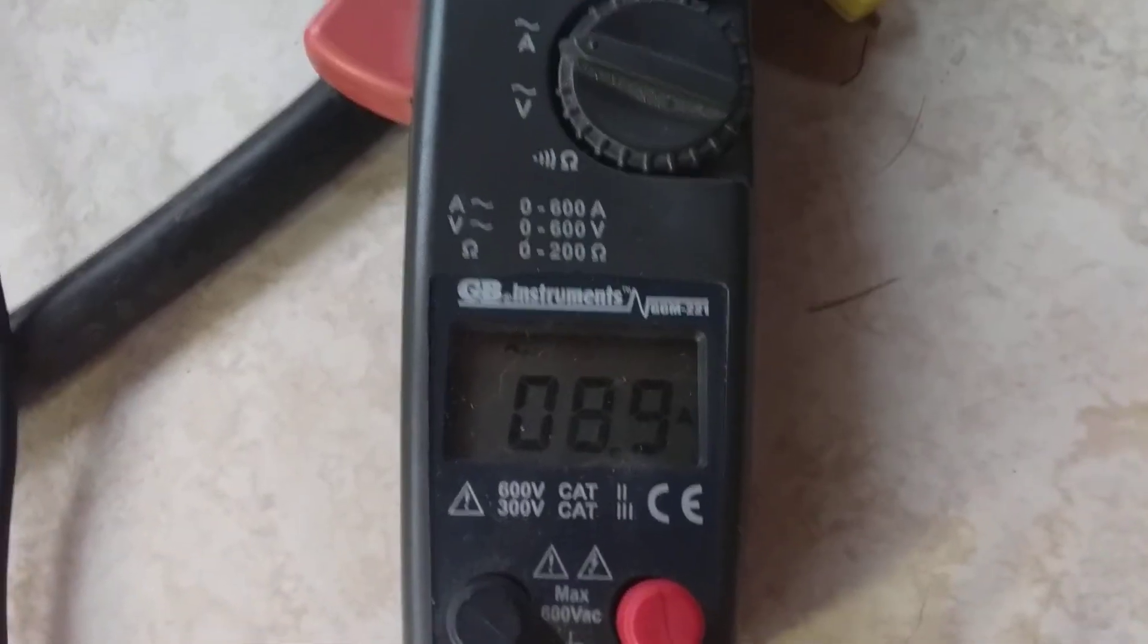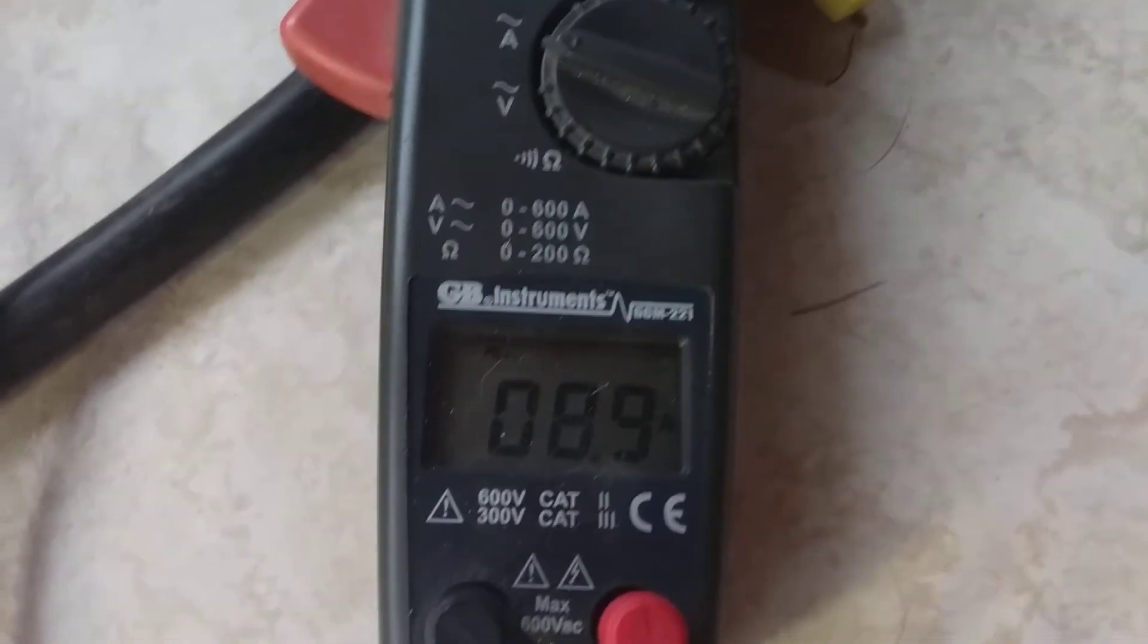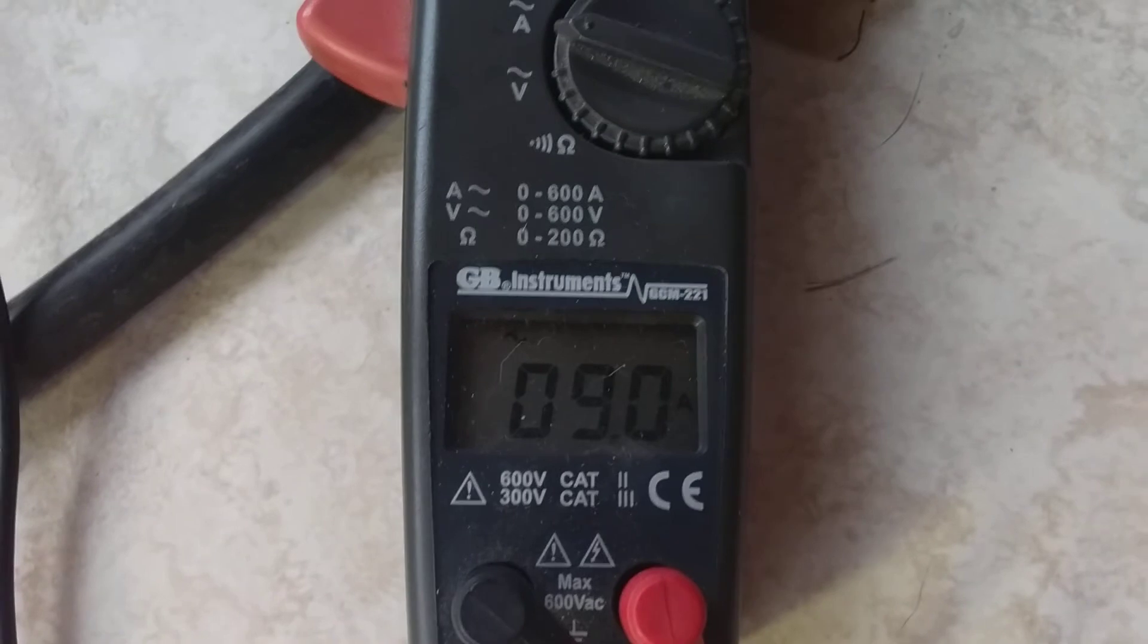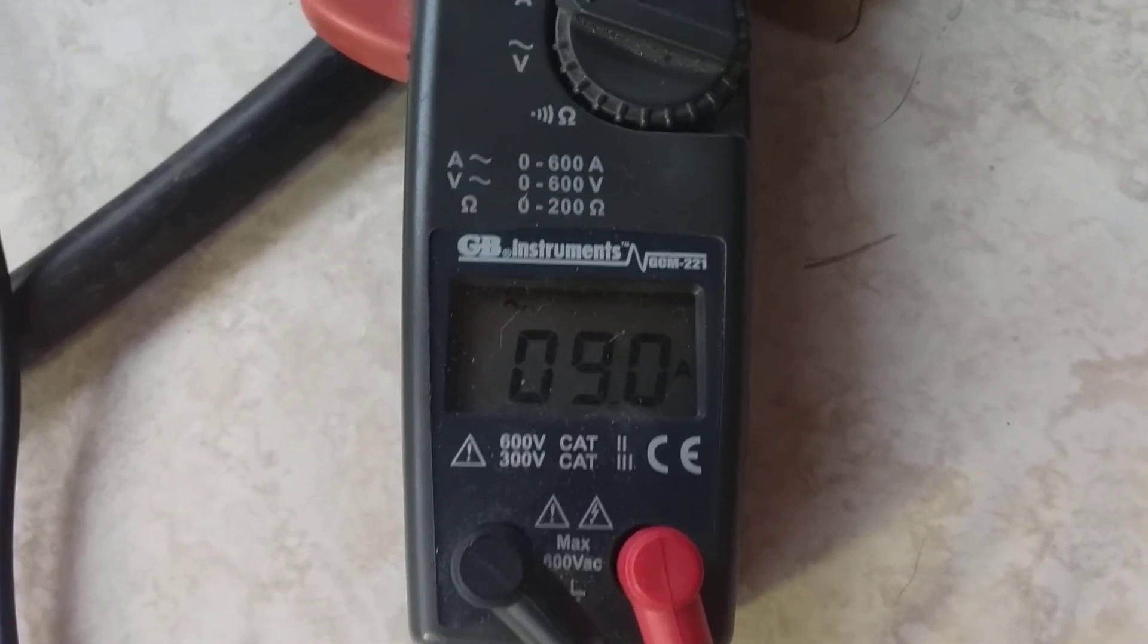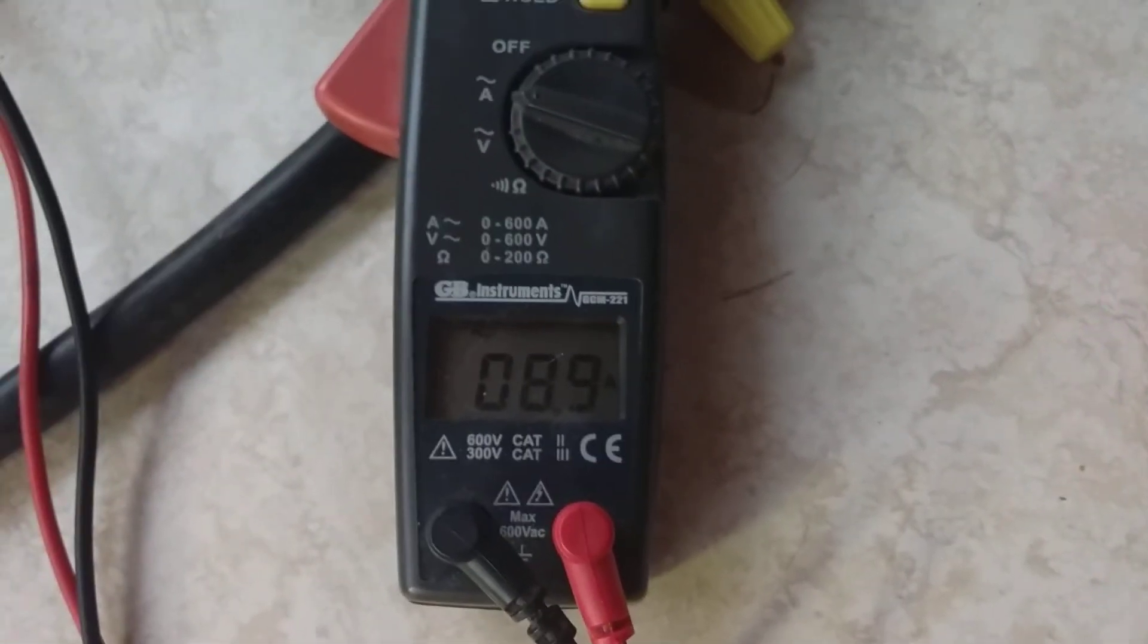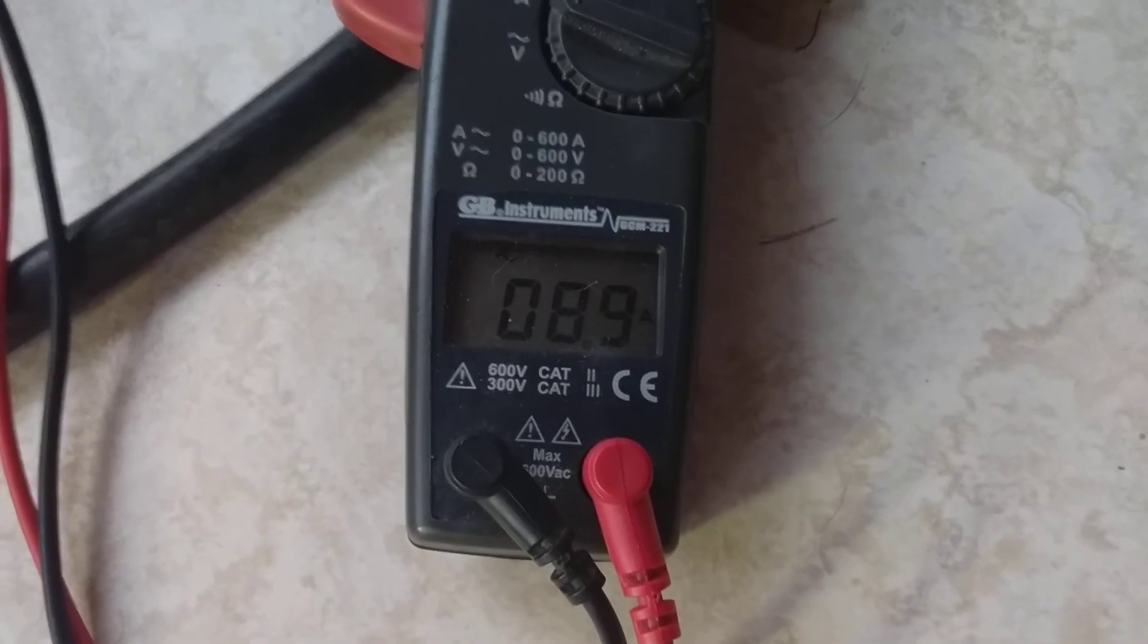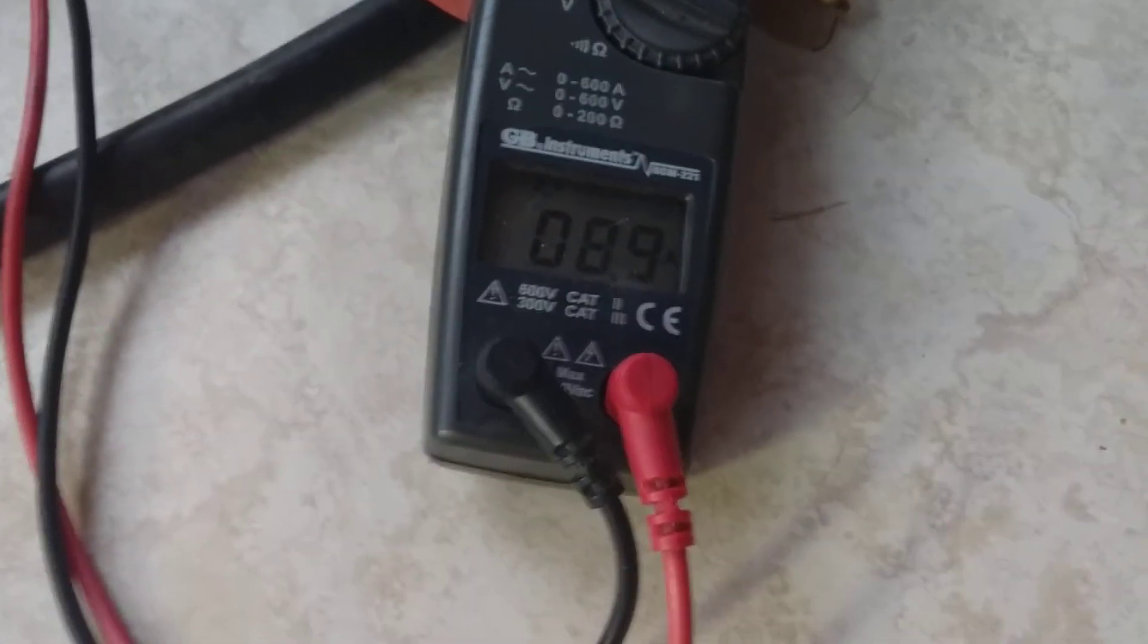Let's take a look at the amps that we're drawing. Now we are drawing 9 amps right there. 8.9 amps. 9 amps right now. So it's drawing a little bit of power right there. Let's take a look back at the light.